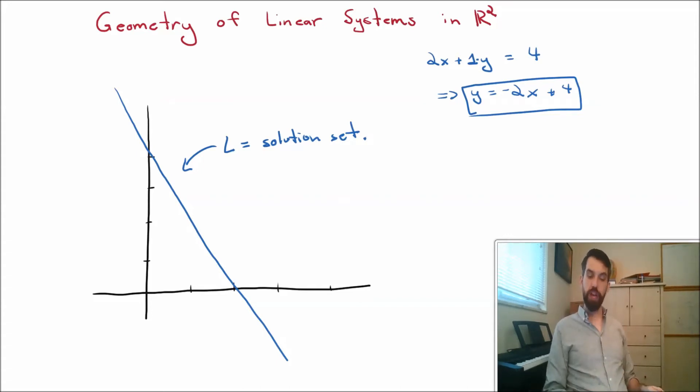So now let me generalize just a little bit. Here we had 2x plus y is equal to 4. Let me now imagine that I have ax plus by is equal to c. So instead of having specific numbers, I've let them be a little bit arbitrary here. And we should be thinking that the solution to this appears to be a line in the case of a is 2 and b is 1 and c is 4 here. But is it always a line?